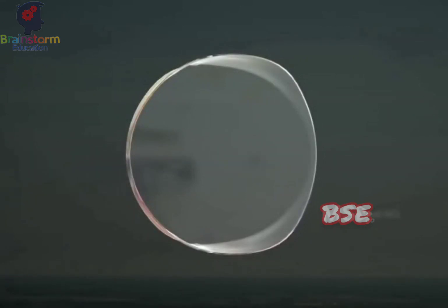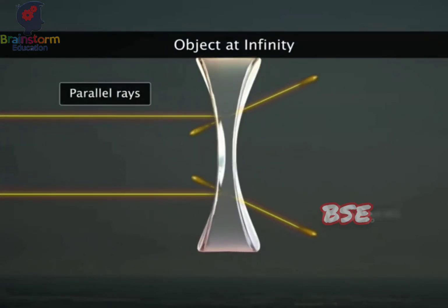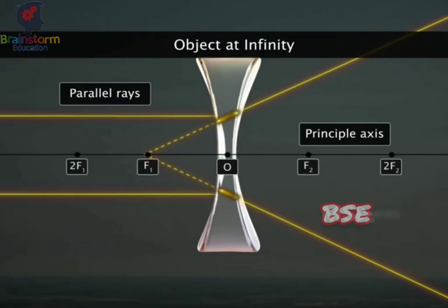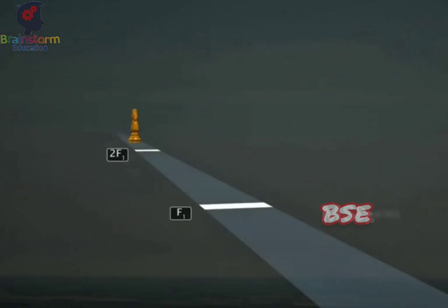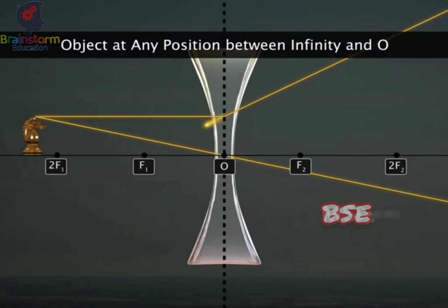When the object is at infinity, the rays diverge after refraction through the concave lens and appear to diverge from the principal focus, forming a virtual, erect, and highly diminished image. When the object is between infinity and the optical center, a virtual, erect, and diminished image is formed between F1 and O on the same side of the lens.